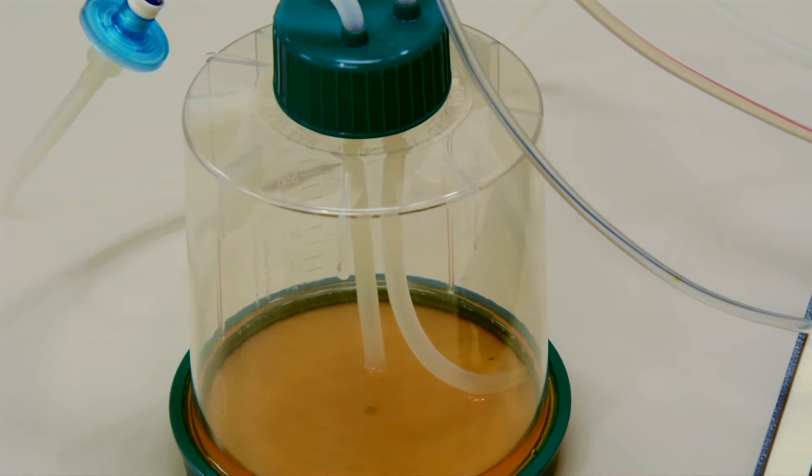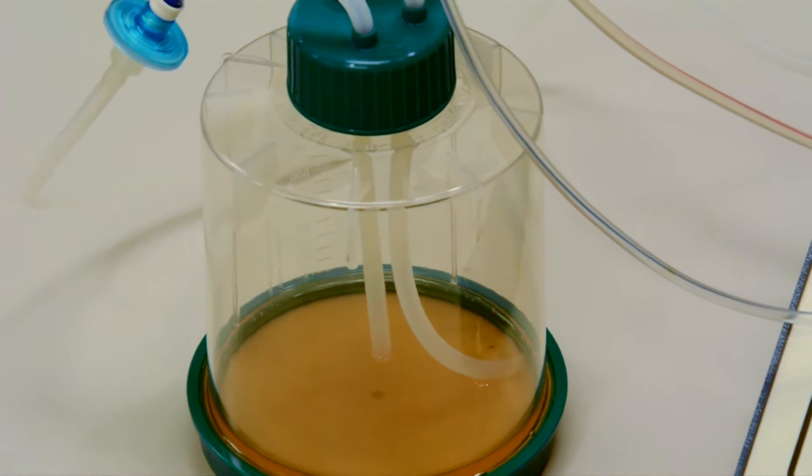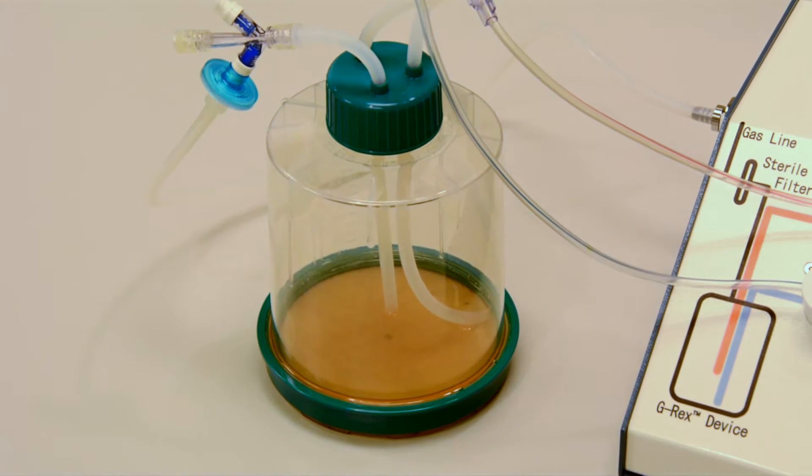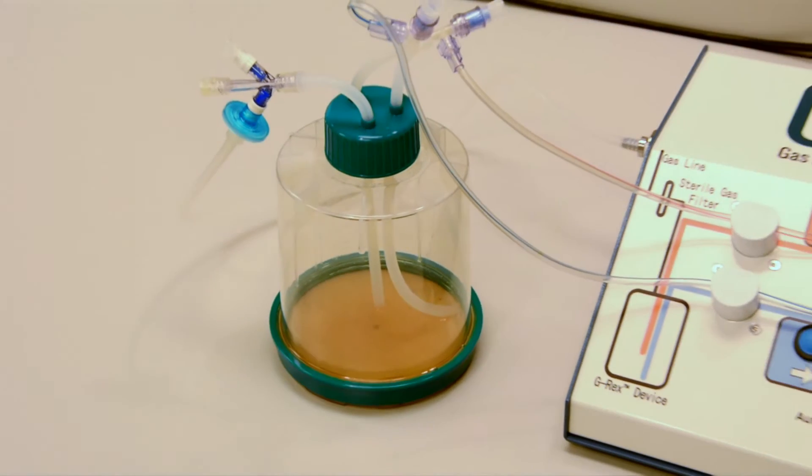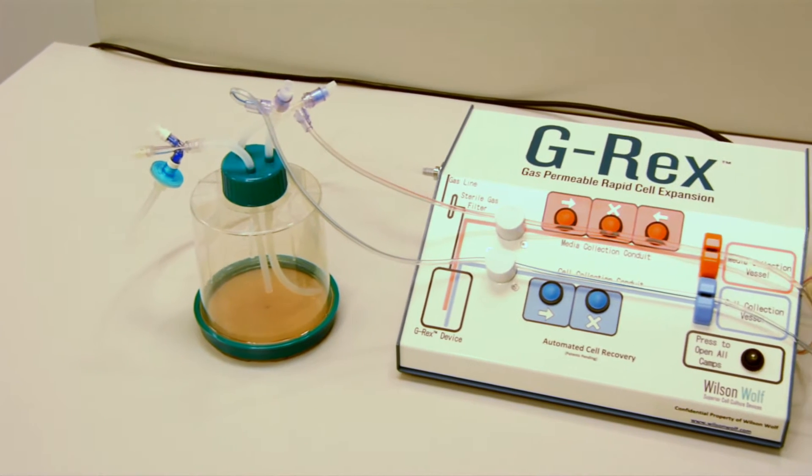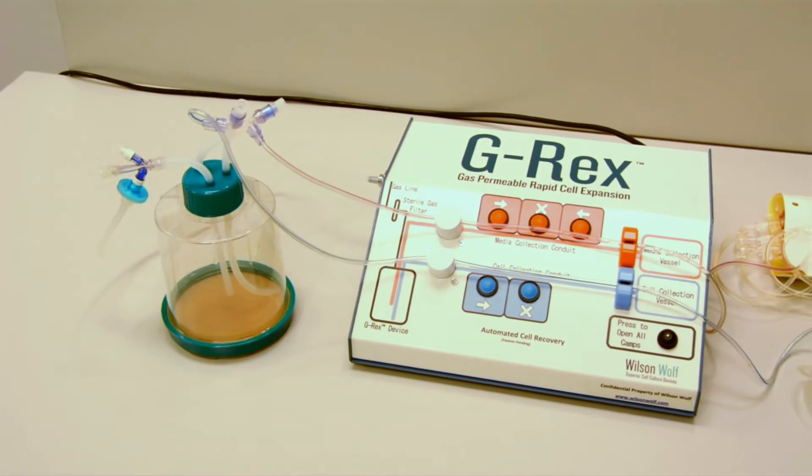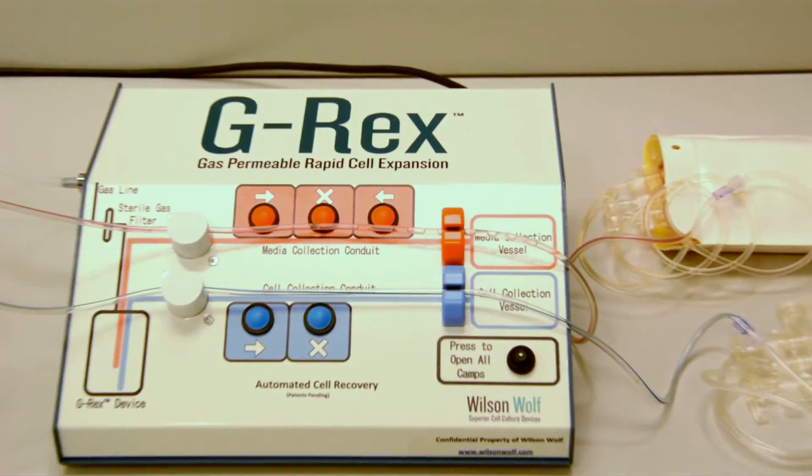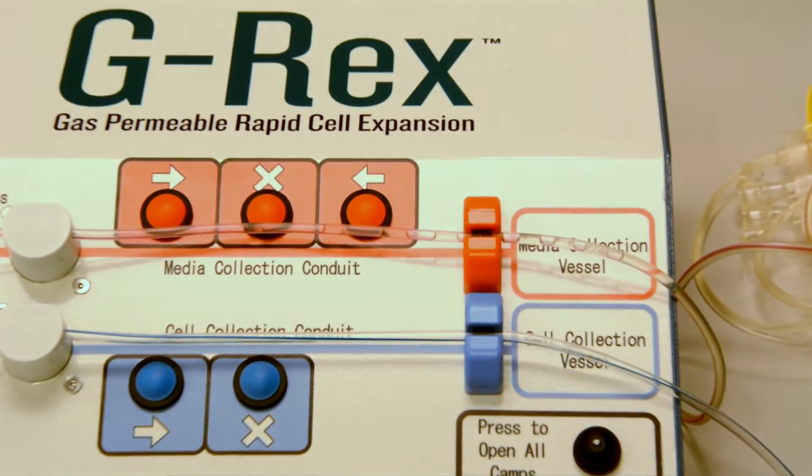This is the G-REX with nearly 90% of media drained out. When the liquid level drops below the media collection line, air is drawn into the tubing, forming bubbles that are sensed by the optical detector, stopping the process automatically.